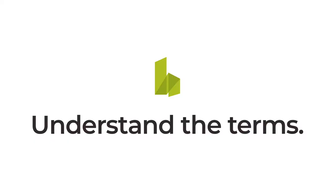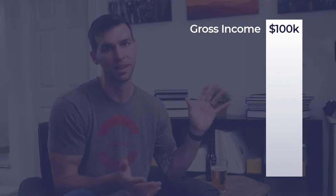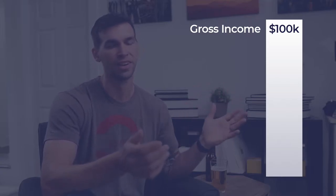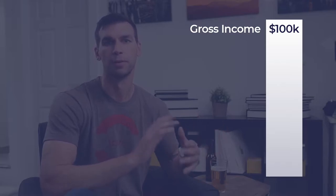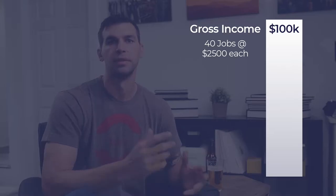The first thing we need to do is understand what we're actually looking at. We're going to use an example of a business that made $100,000 in sales. This is called gross income — that means all the money that comes into the business. So we're going to pretend for the sake of our example that this business booked 40 jobs at $2,500 each and came up with $100,000 in sales.